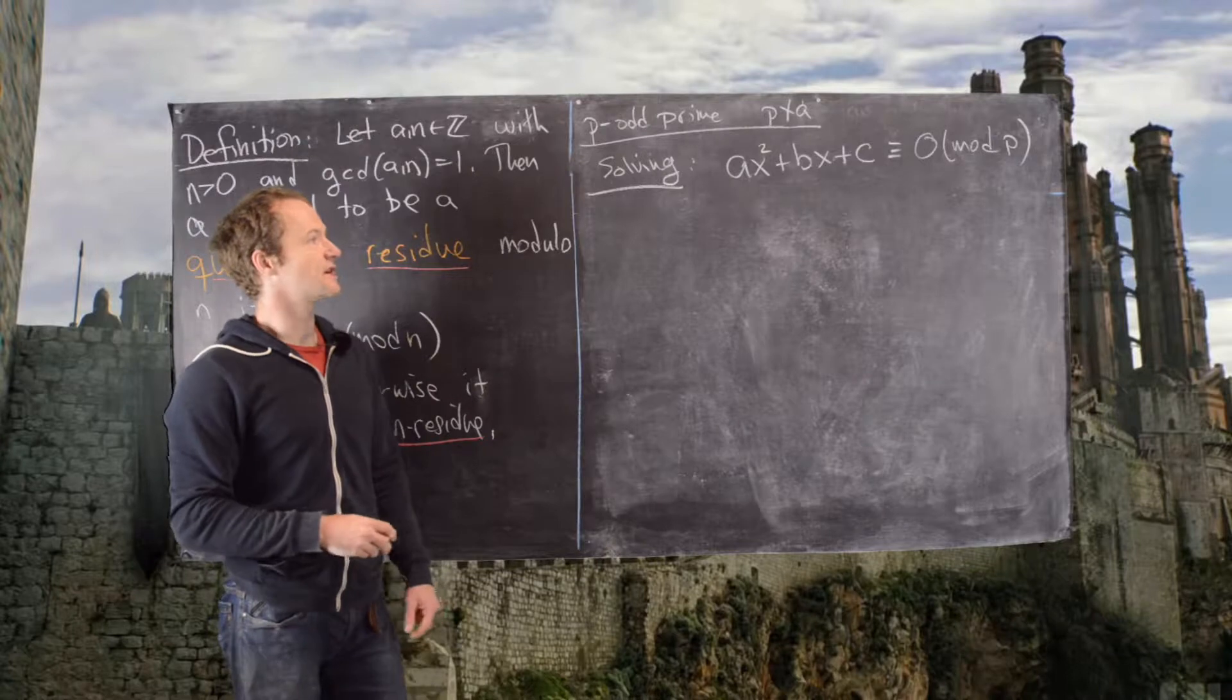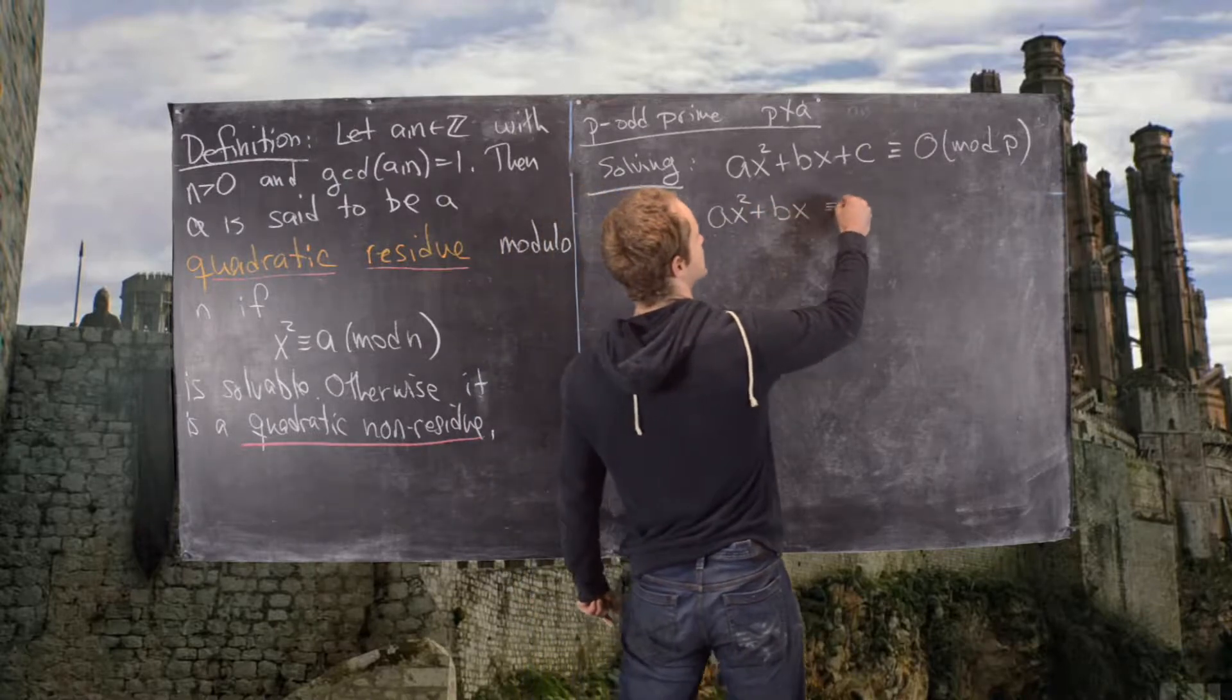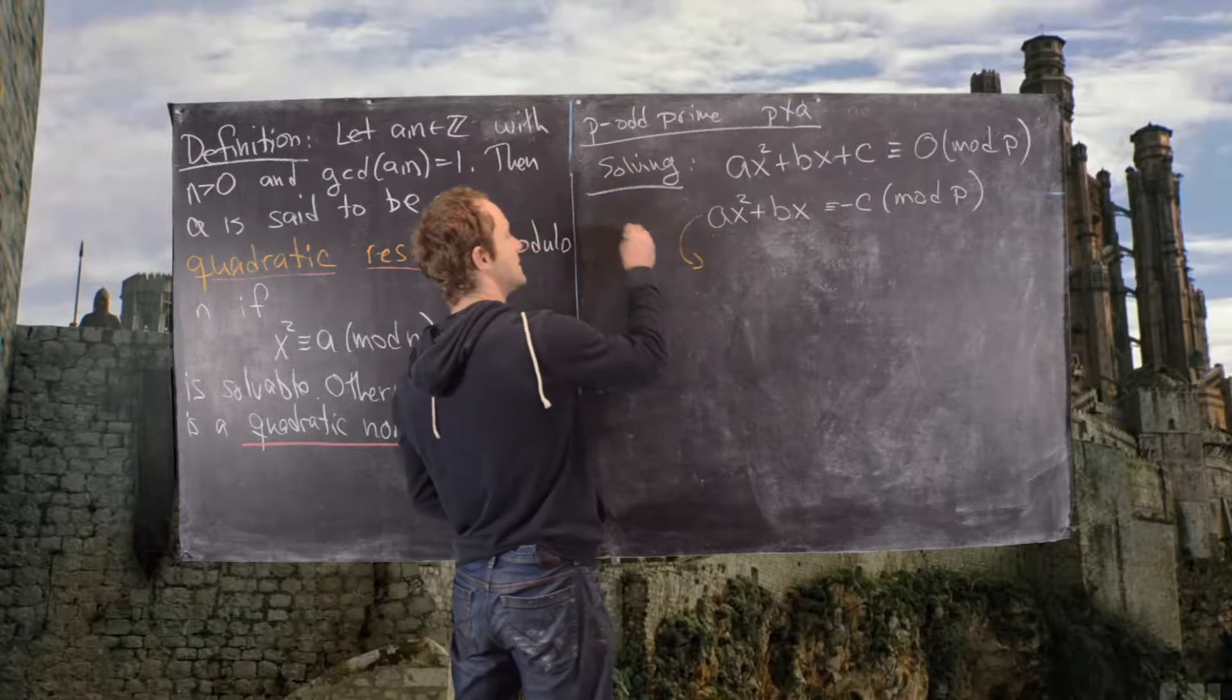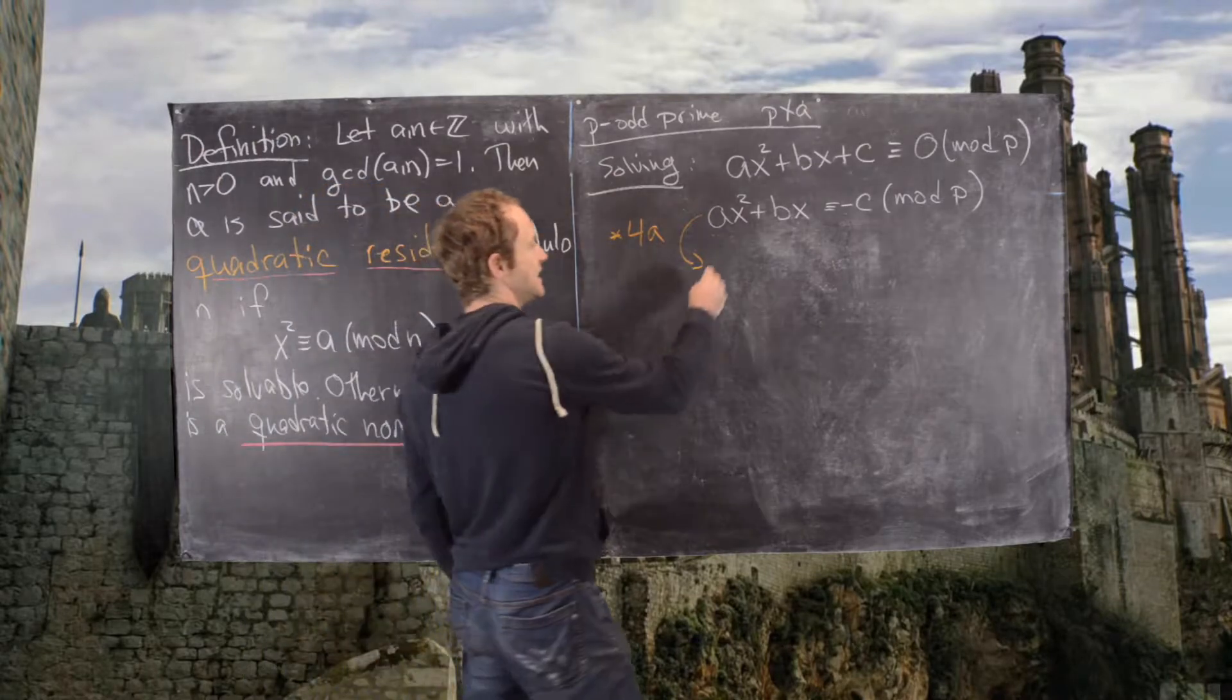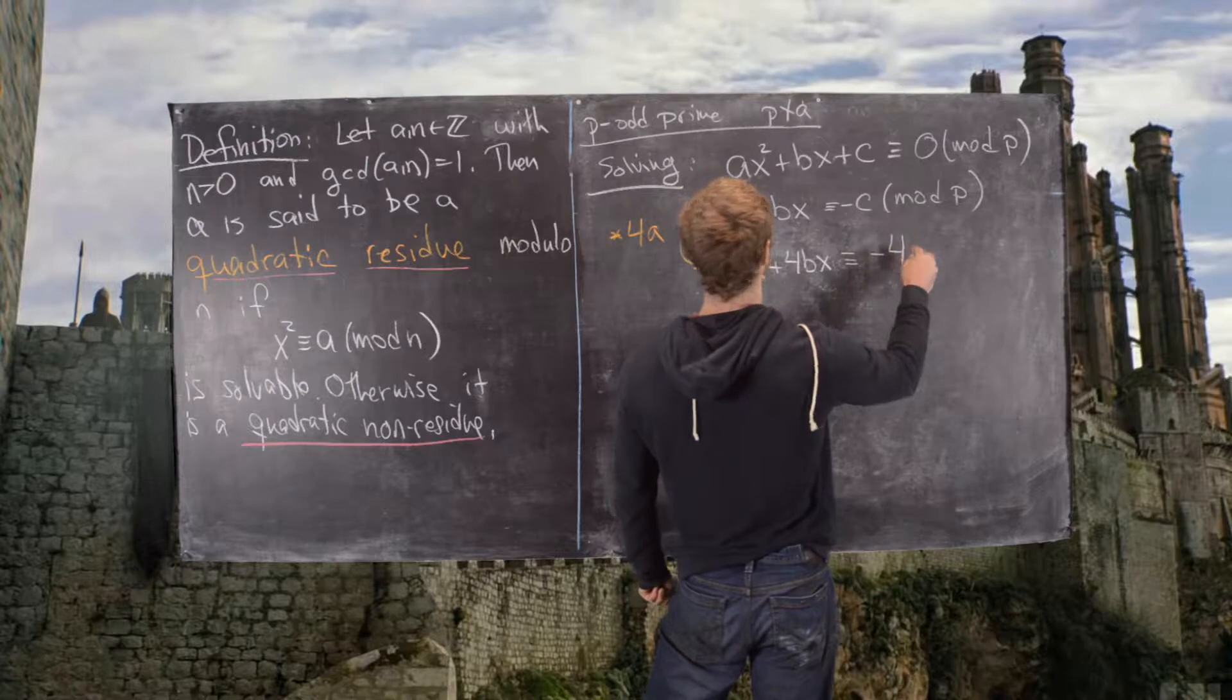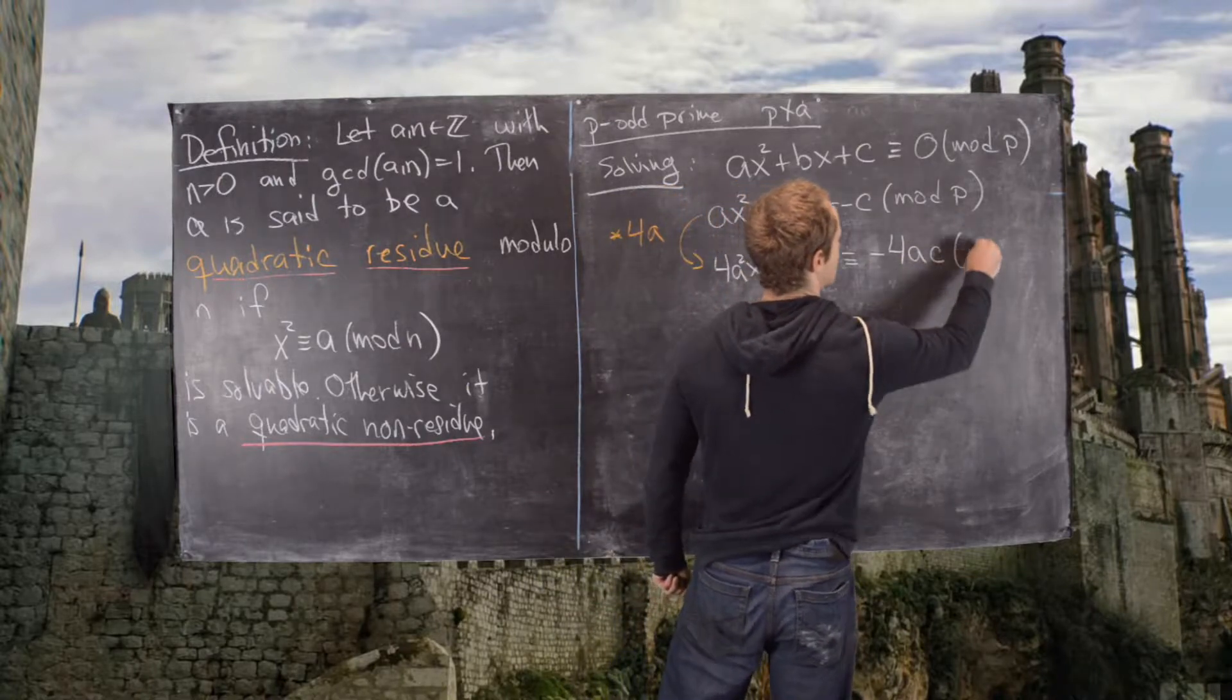So what we're going to start with is moving the c over. So that's going to give us ax squared plus bx is congruent to negative c mod p. And then the next thing that we're going to do is multiply by 4a. That gives us 4a squared x squared plus 4abx is congruent to negative 4ac mod p.